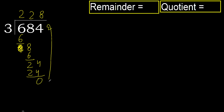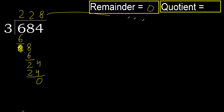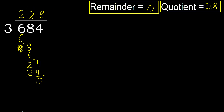There is no remainder, therefore we finish. 684 divided by 3 is solved here.